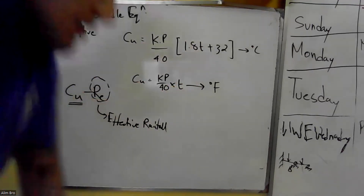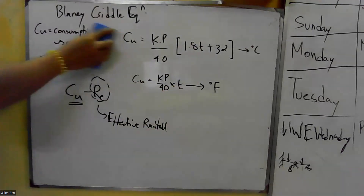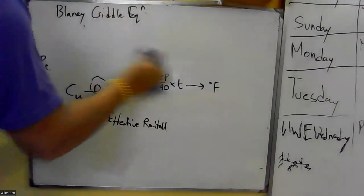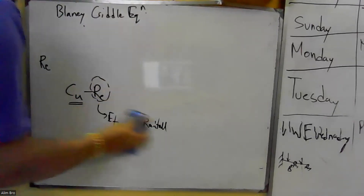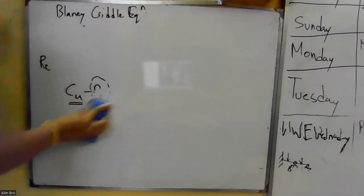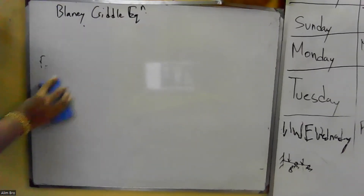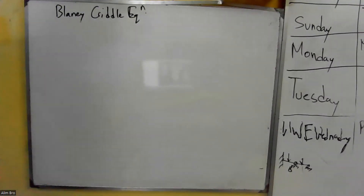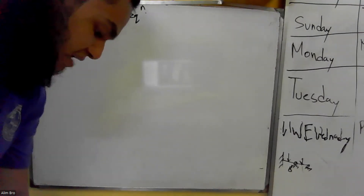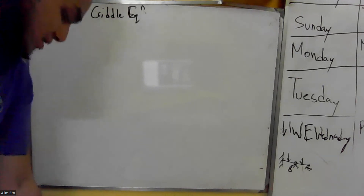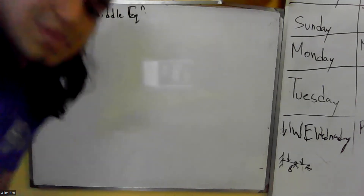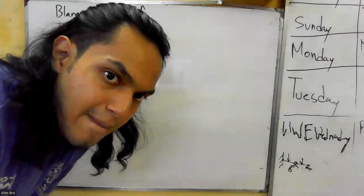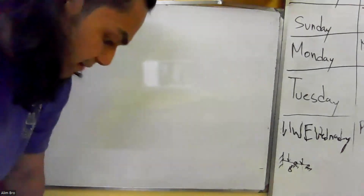I will show you step by step how to make the table and how to run it — it is an easy part. The Blaney-Criddle slider method is the owner-class method.